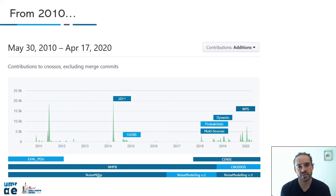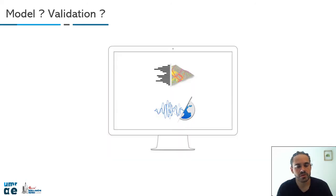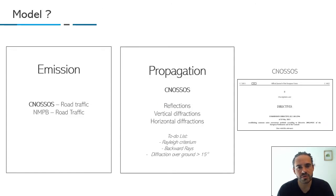During the last two years, we had huge improvements in noise modeling. Some improvements included CNOSSOS, which I will show you after, but also a user interface. About the model, we decided to develop the CNOSSOS EU model, thanks to the Directive 2015. For the emission part, we also have the NMPB French model.